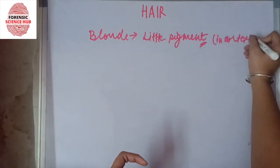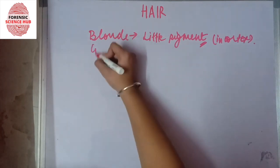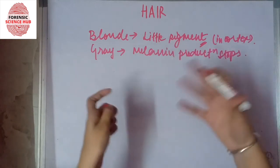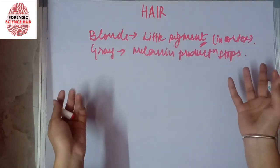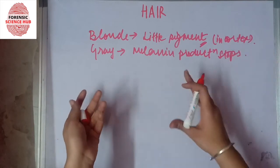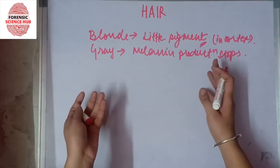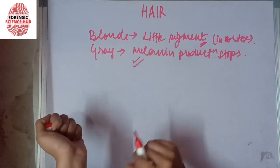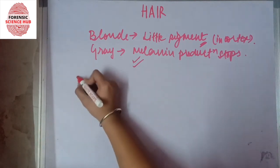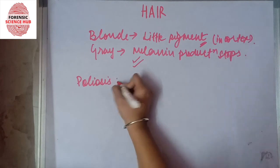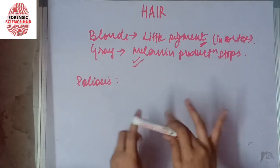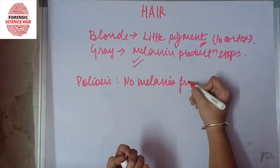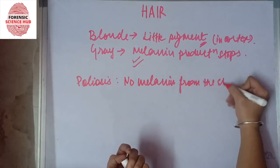Gray color occurs when melanin production stops. As we grow older, our body stops producing melanin, so the black color is no longer present and we see gray hair. There is also a condition known as poliosis — this is a typically spotted area that never possessed melanin from the very start.